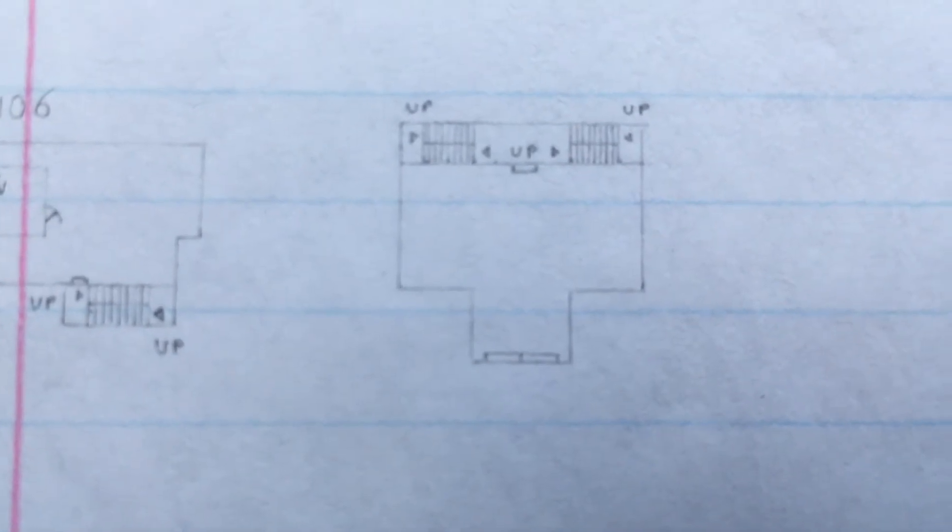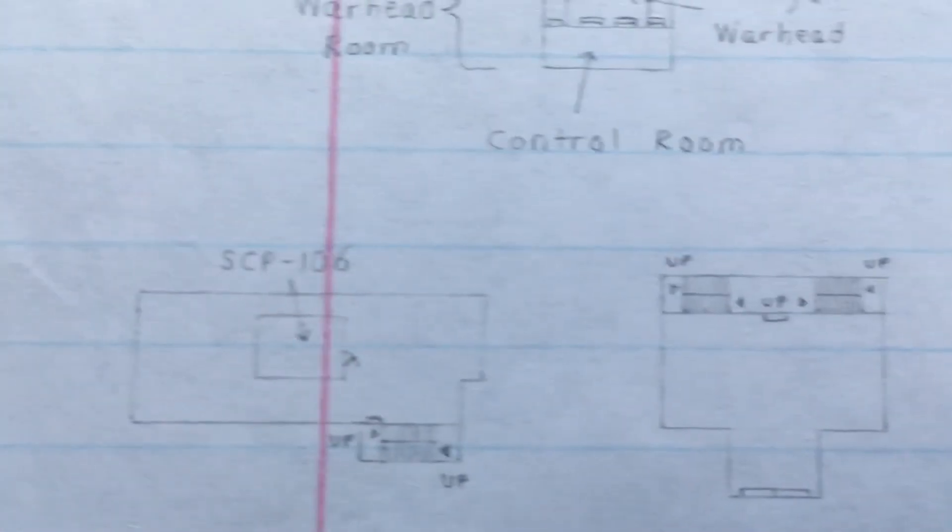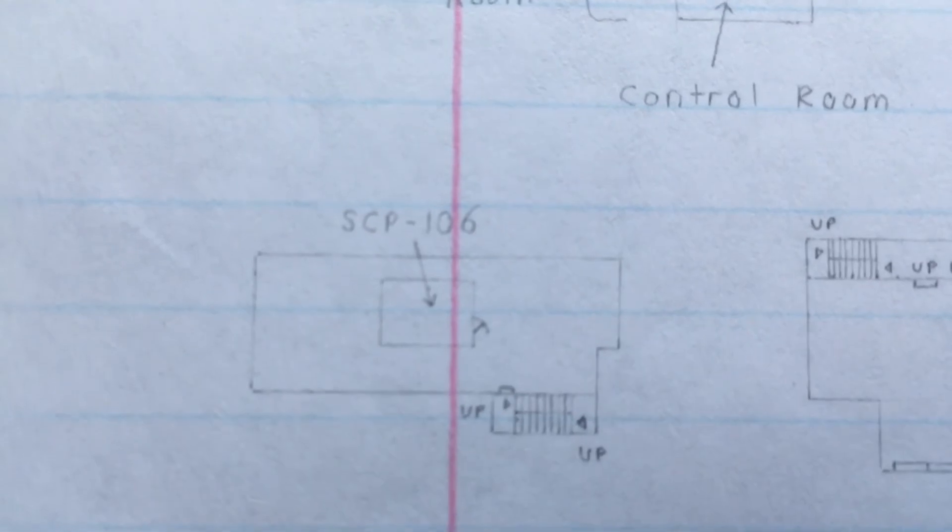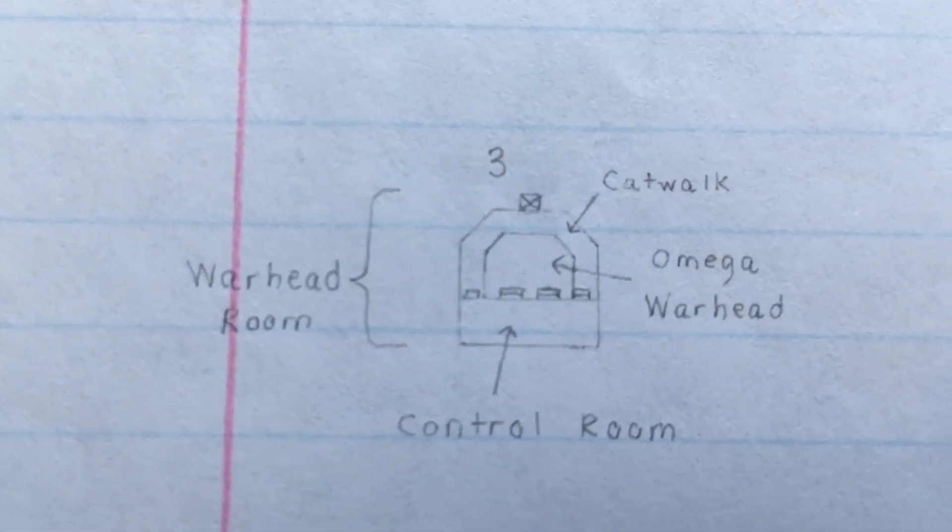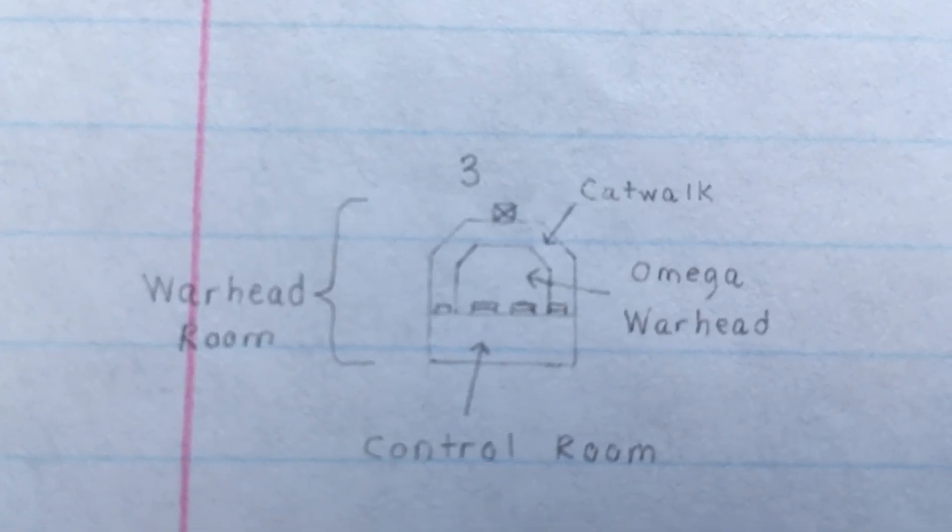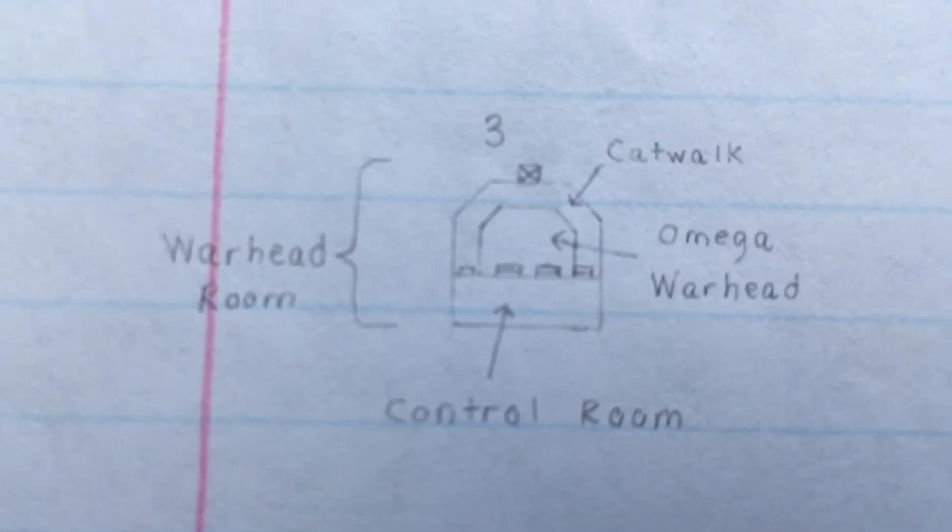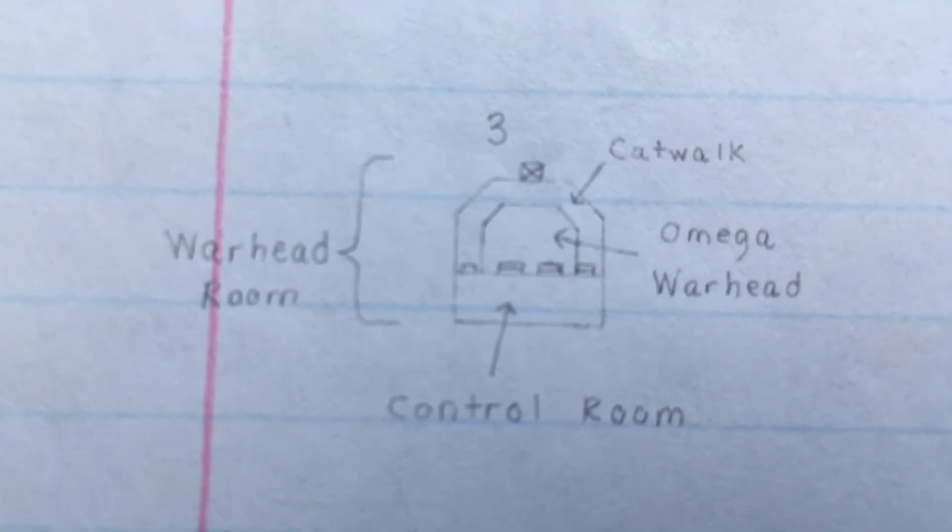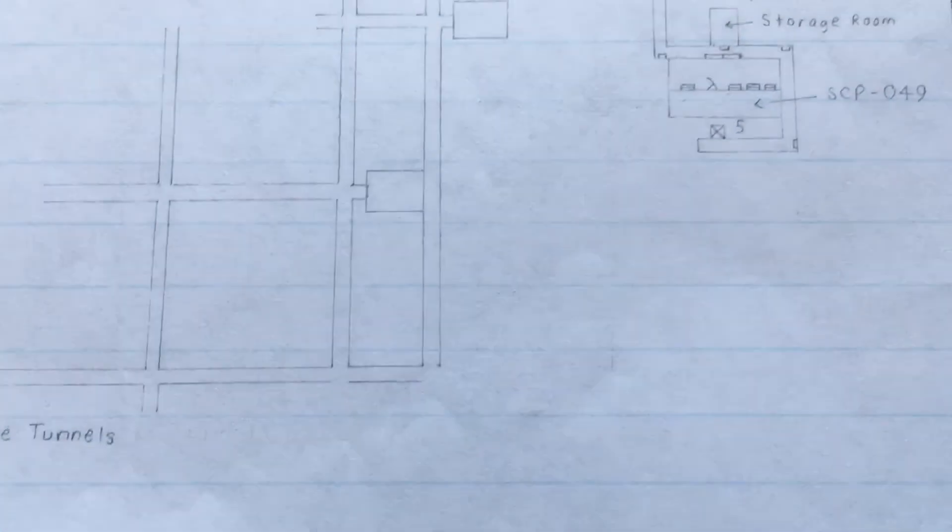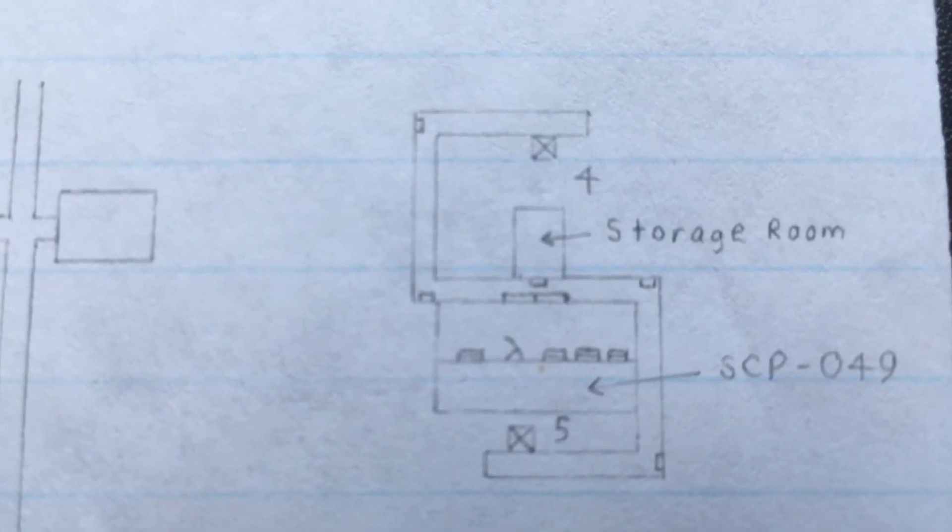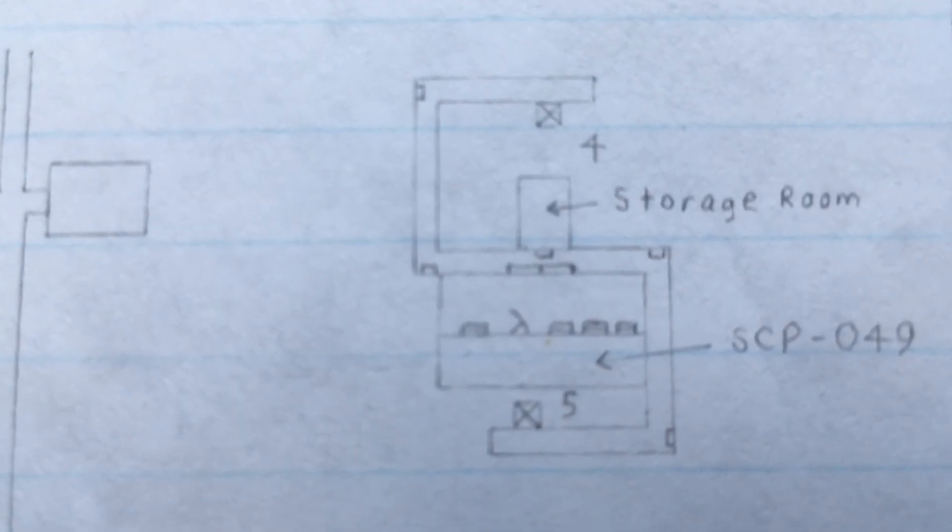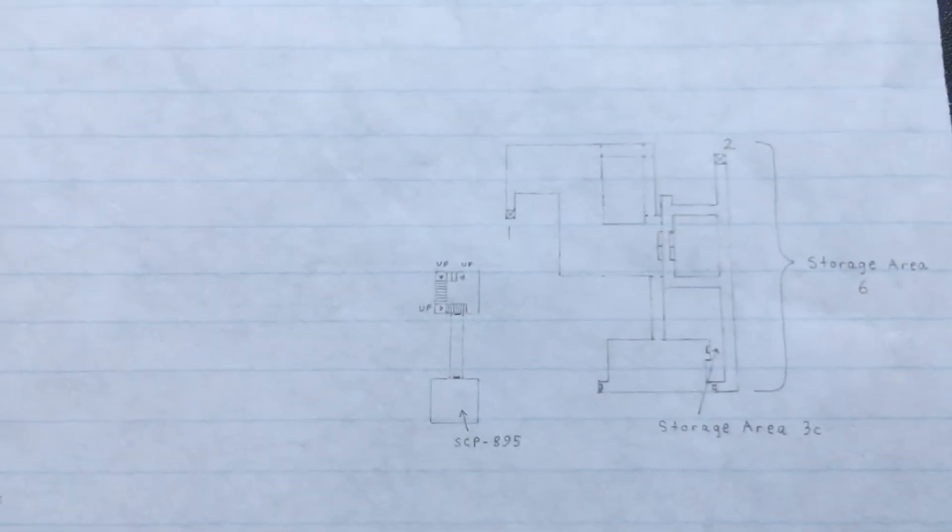Here's the actual 682 chamber. As you can see, you can't actually go beyond this blast door. Here's 106's chamber, which I don't know why you would want to go down there. Here's the warhead room - you can see the actual warhead and you also have the control room so you can turn off the warhead. Maintenance tunnels, and we still have 049's chamber, which is shaped like an ass, which is pretty interesting. And that's it.